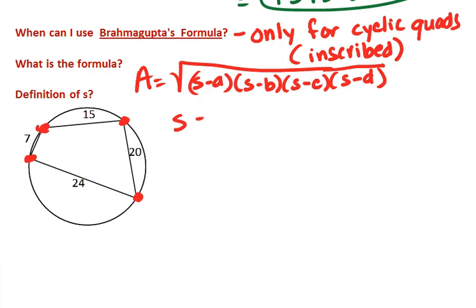And what is S? It is again semi-perimeter. So for a quadrilateral, we would have to add all four sides.